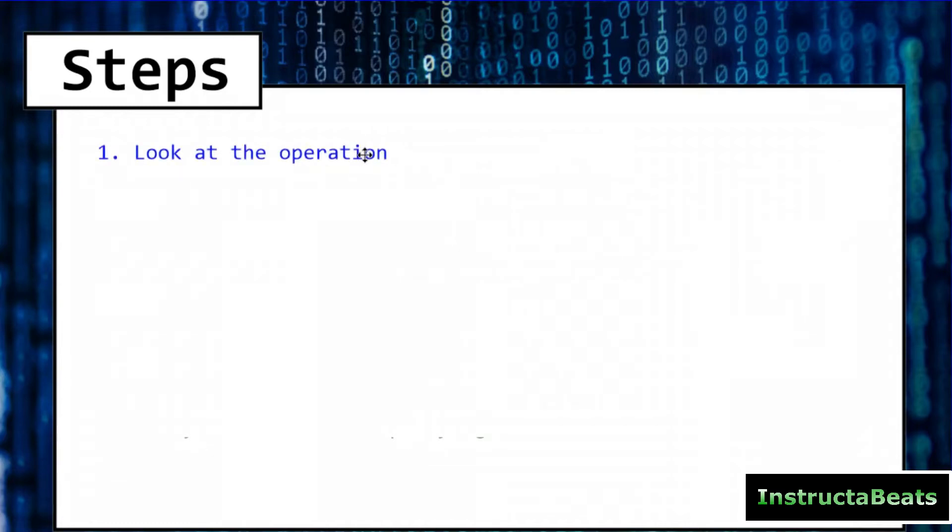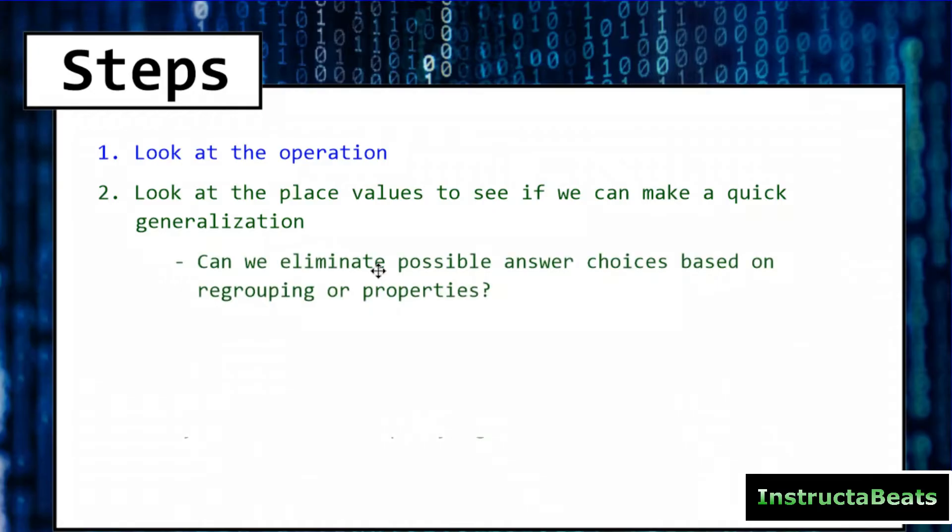Step number one, we're going to look at the operation. Today it's going to be subtraction, but that's going to lead us to step number two because we want to look at the place values and see if we can make a quick generalization. Can we eliminate possible answer choices based on regrouping or properties of the operation?